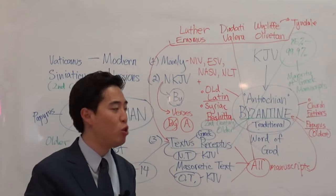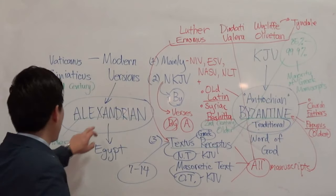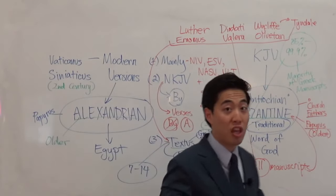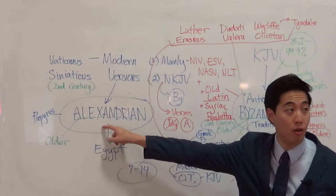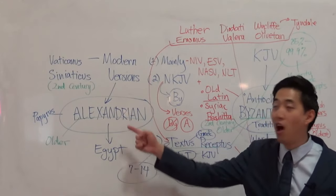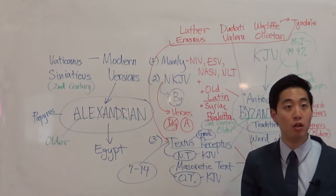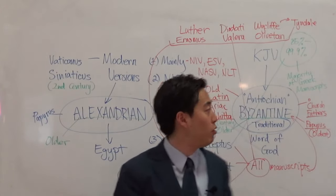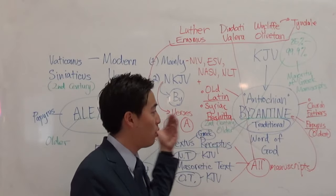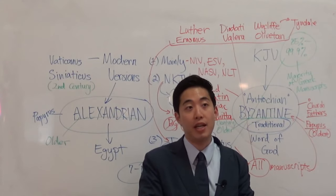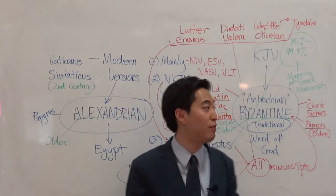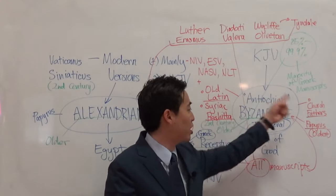These were the Bibles of the martyrs — those who bled, gave up their lives, translated Scripture, opposed the Catholic Church system, and stood for the Word of God as Protestant Christians. Obviously we want to use these manuscripts. Why would you turn to a philosophical Egyptian pagan area instead? Scholars do it because they go by scholarly opinion, but if you want something close to Christian, look at the fruits.